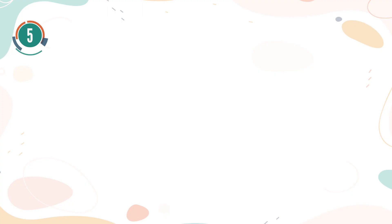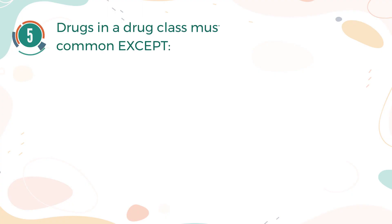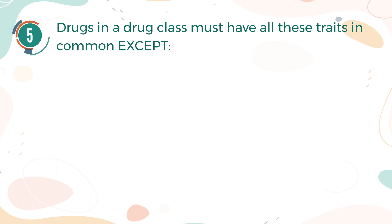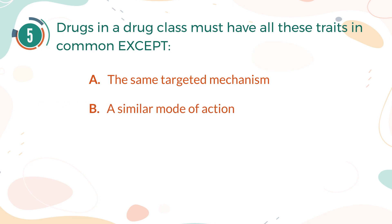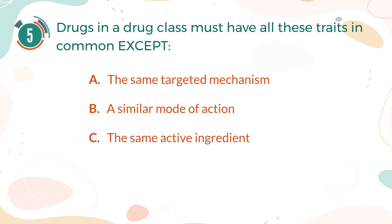Number 5. Drugs in a drug class must have all these traits in common except: A. The same targeted mechanism. B. A similar mode of action. C. The same active ingredient. D. Similar structures.